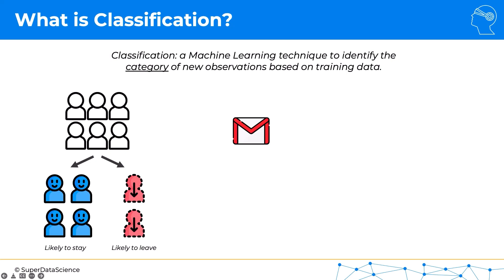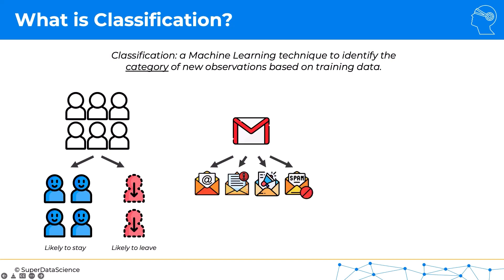Another application is email. An email might be classified as normal mail, or as important and urgent mail — especially in Gmail you'll see those little chevrons or triangles at the beginning of a message indicating importance. It might be categorized as a promotion and put into a separate folder so it doesn't fill up your main inbox, or it might be categorized as spam. Spam filters have become very good over the past few years, and we barely see any spam in our inboxes thanks to classification algorithms.